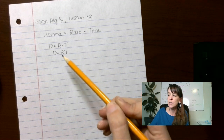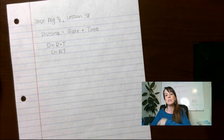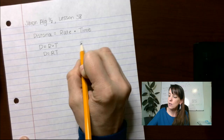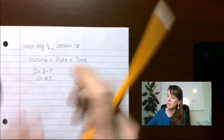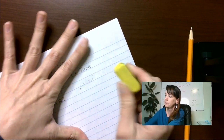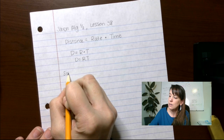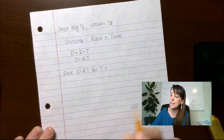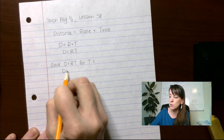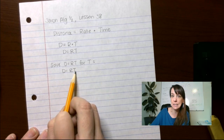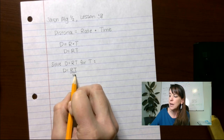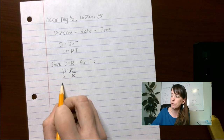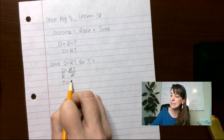What I really like about this is that we can manipulate this to find rate, to find time, to do any of those. So if I asked you to solve this equation for time: distance equals rate times time. I'm multiplying rate times time and I want to get that t by itself. The opposite of multiply is to divide. If I divide by r, t is all by itself. What I do to one side I must do to the other. So t equals distance divided by rate.